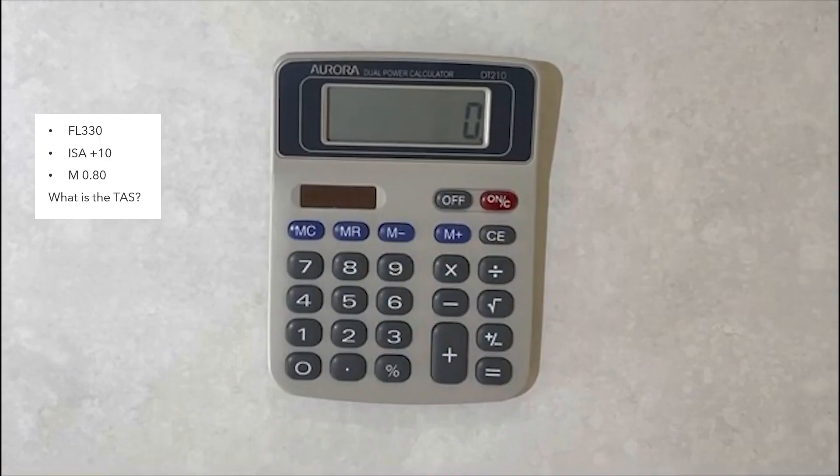Let's begin. In the first example we have flight level 330, an ISA deviation of plus 10, and we want to find the true airspeed for a Mach number of 0.8. Now your calculator might be slightly different but the process is still the same.